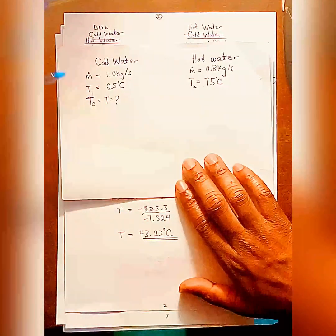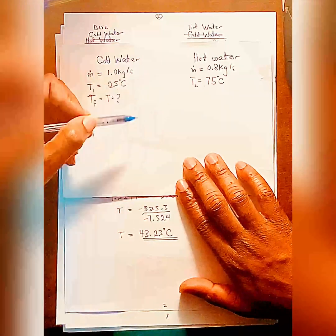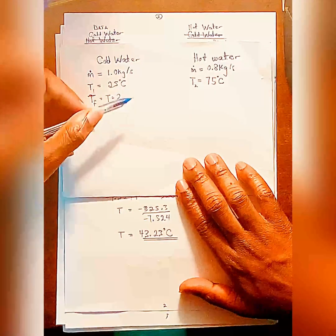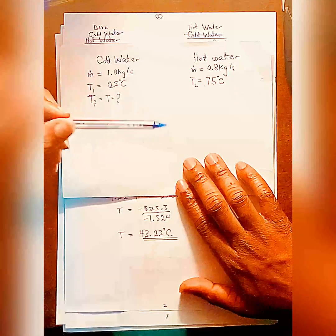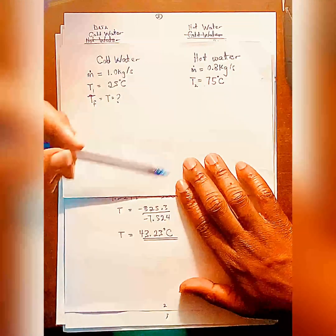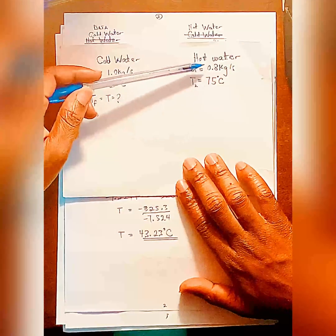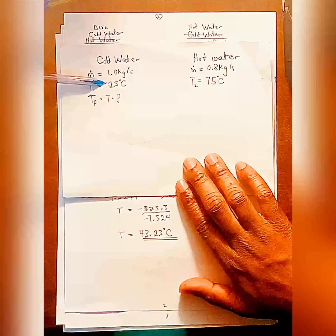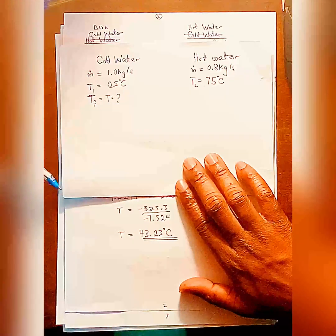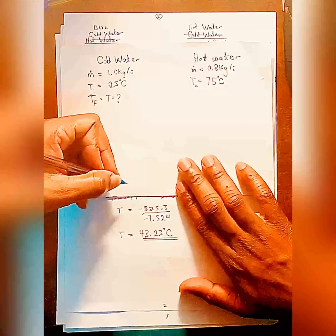After the mixing, they all attain the same equilibrium or final temperature. And they say in the same process, heat is lost to the surrounding. So the heat lost by the hot water, some is gained by the cold water, and some is also lost to the surrounding. So we know how to write the equation for that.